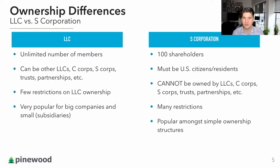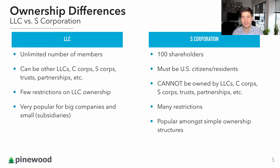LLCs are very popular for small startups and also for large international companies who need to have many subsidiaries. Typically an LLC is very quick and easy to spin up compared to an S corporation. S corporations are actually limited to a hundred shareholders and they must be US citizens and residents. They cannot be other LLCs, other S corporations, C corporations, trusts, or partnerships — they actually have to be individuals. So if you have a one or two person owned company, you may be okay going with an S corporation.